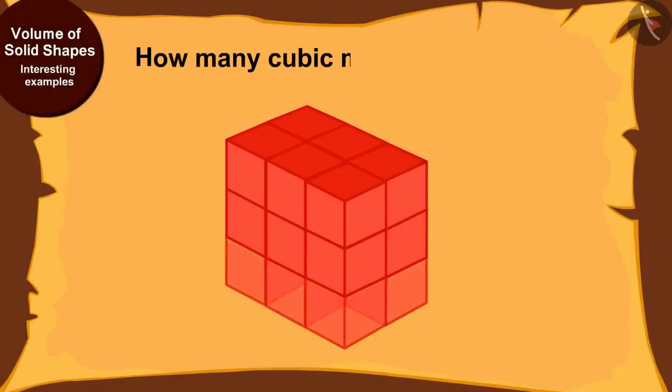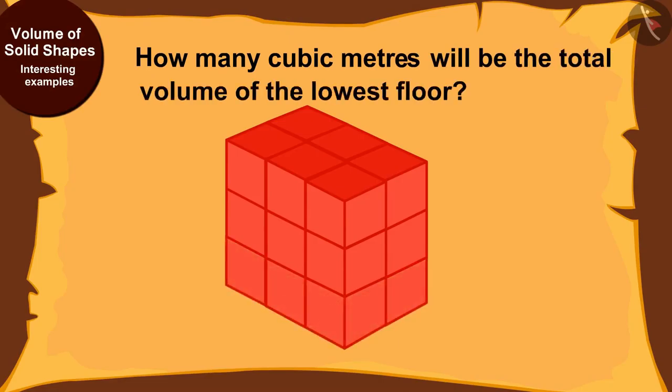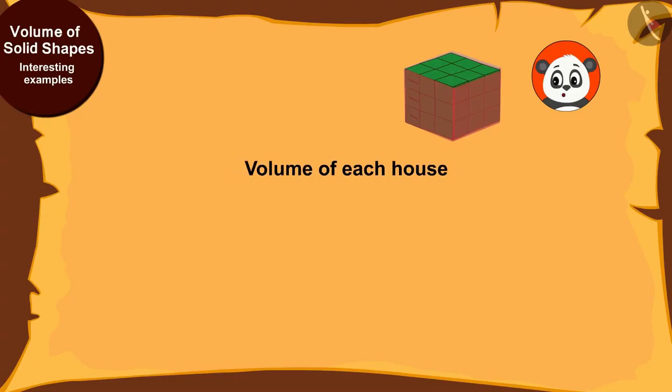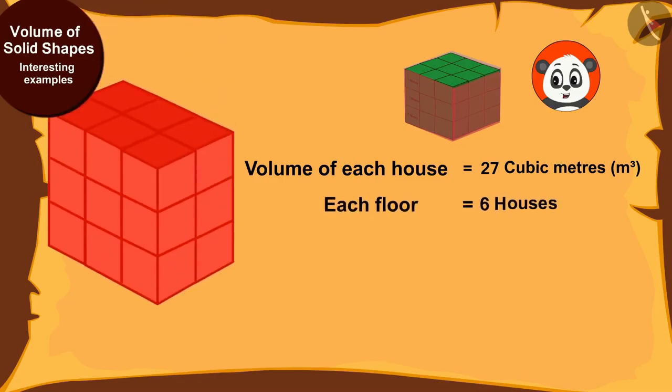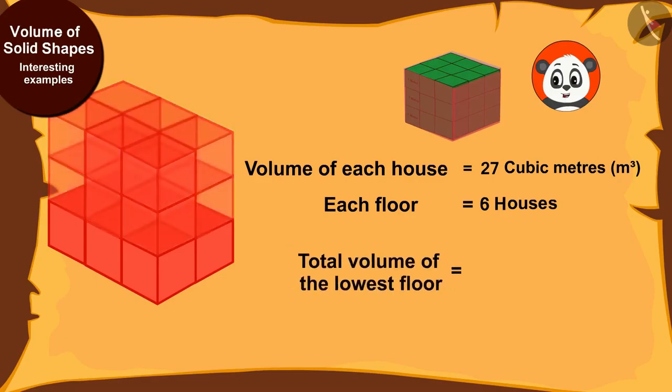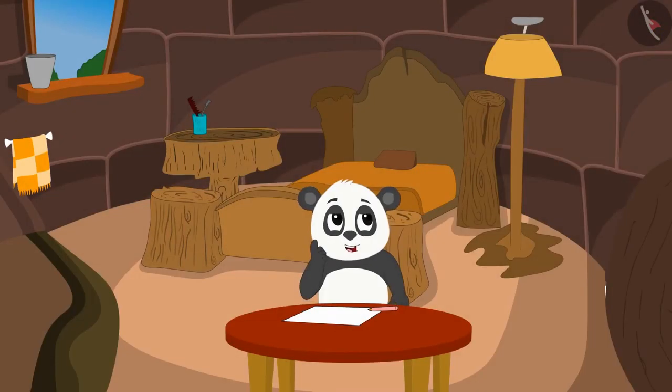The volume of each house is twenty-seven cubic meters, and there are six such houses on each floor. This means the total volume of the lowest floor will be six times twenty-seven, that is 162 cubic meters. And if I make twelve floors in my building, the total volume will be equal to how many cubic meters?